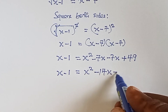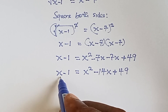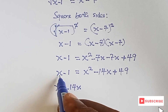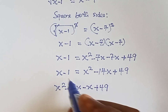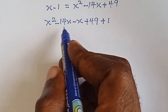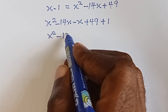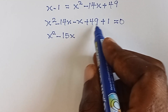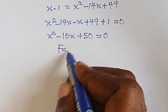Now let's rearrange. Move x minus one to the other side: x squared minus 14x minus x plus 49 plus one equals zero. Combining like terms: x squared minus 15x plus 50 equals zero.